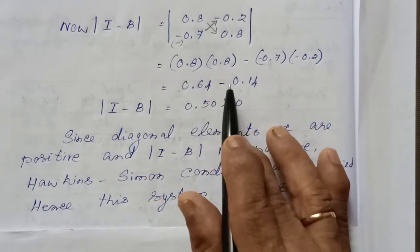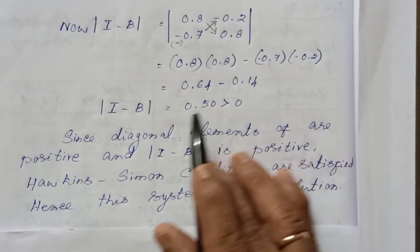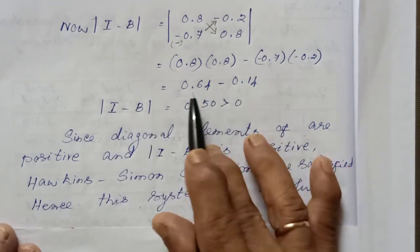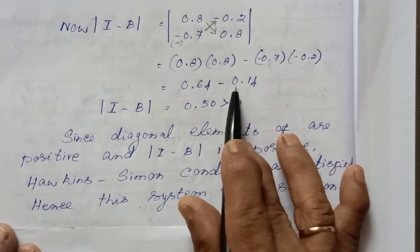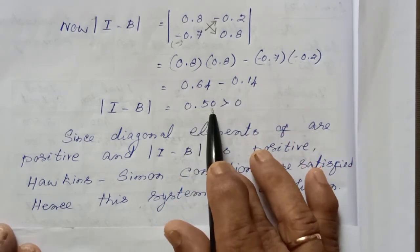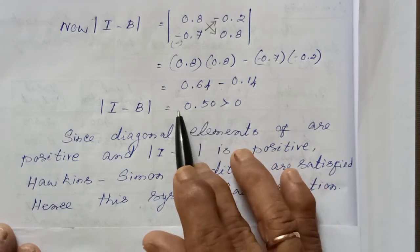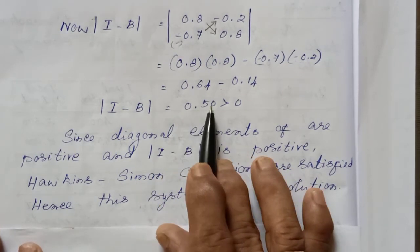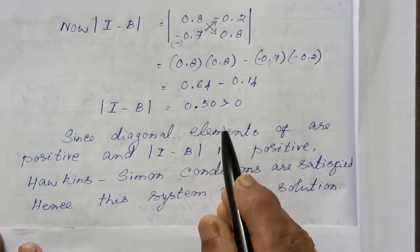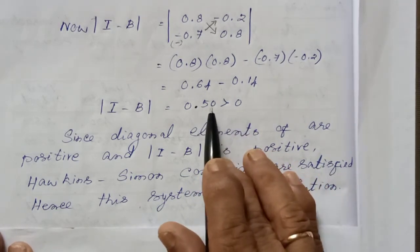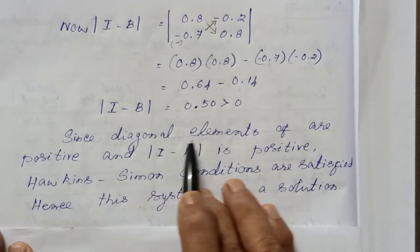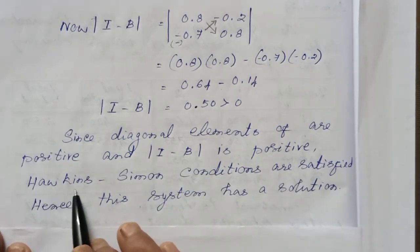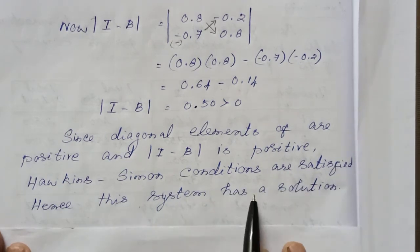The modulus of I minus B equals 0.64 minus 0.14, which gives 0.50 — a positive value. The sign is positive. Since the diagonal elements are positive and the modulus of I minus B is positive, the Hawkins-Simon conditions are satisfied and this system has a solution.